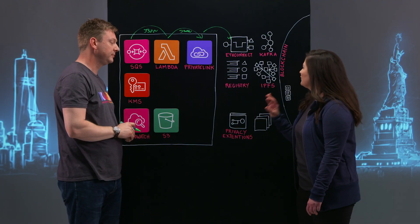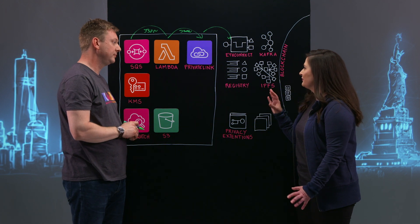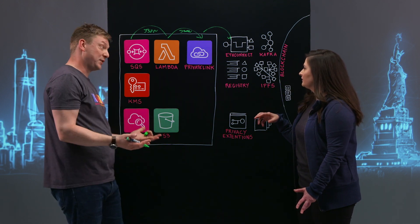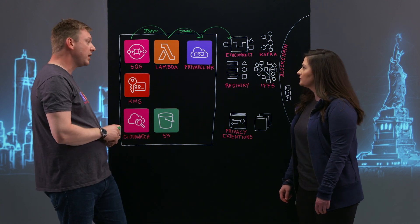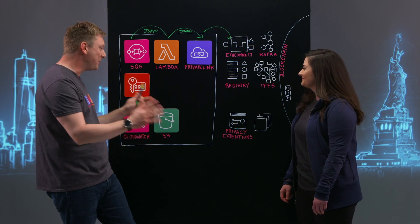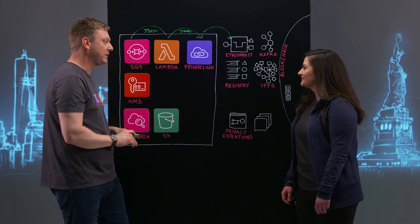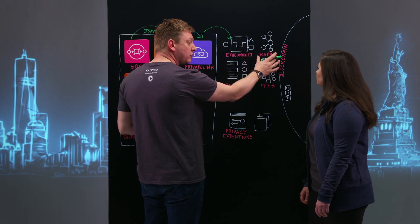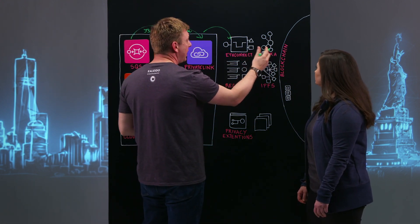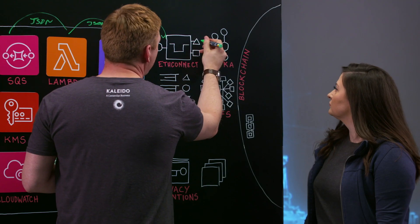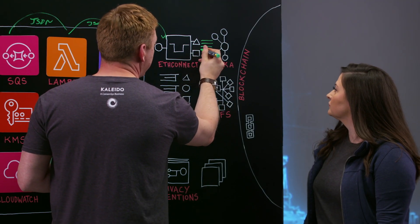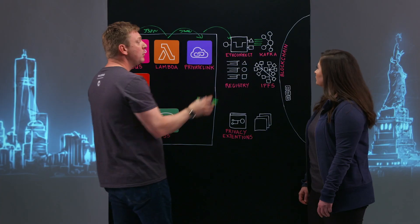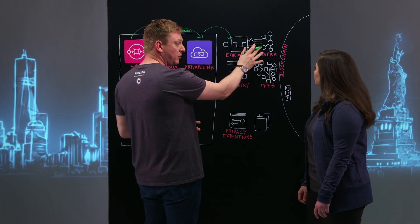So we're using ETH Connect to tackle some of the scalability issues? Yes, that's a key part of what it does, as well as all that ABI encoding and stuff that you don't need to deal with. It has in its core a Kafka streaming layer that's built into the Kaleido platform, and what we do is we split the transactions based on the nonce, which is what you have to do in an Ethereum chain.